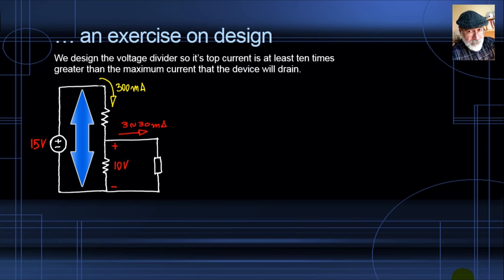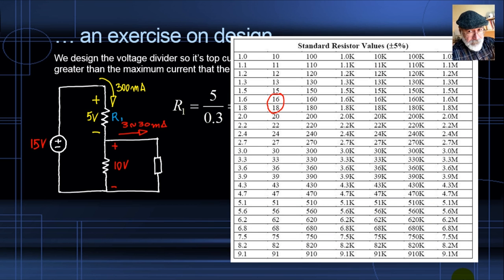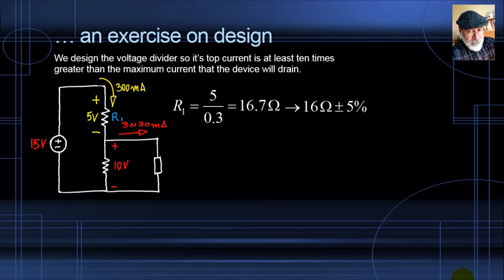We design the divider so the top current is at least 10 times the maximum device current: 10 × 30 mA = 300 mA. Since the total is 15 V and the bottom is 10 V, the top resistor has 5 V. Using Ohm's Law: R1 = 5 V / 0.3 A = 16.7 ohms. Checking the standard resistor table with ±5% tolerance, 16.7 is not available — we choose 16 ohms as the closest.